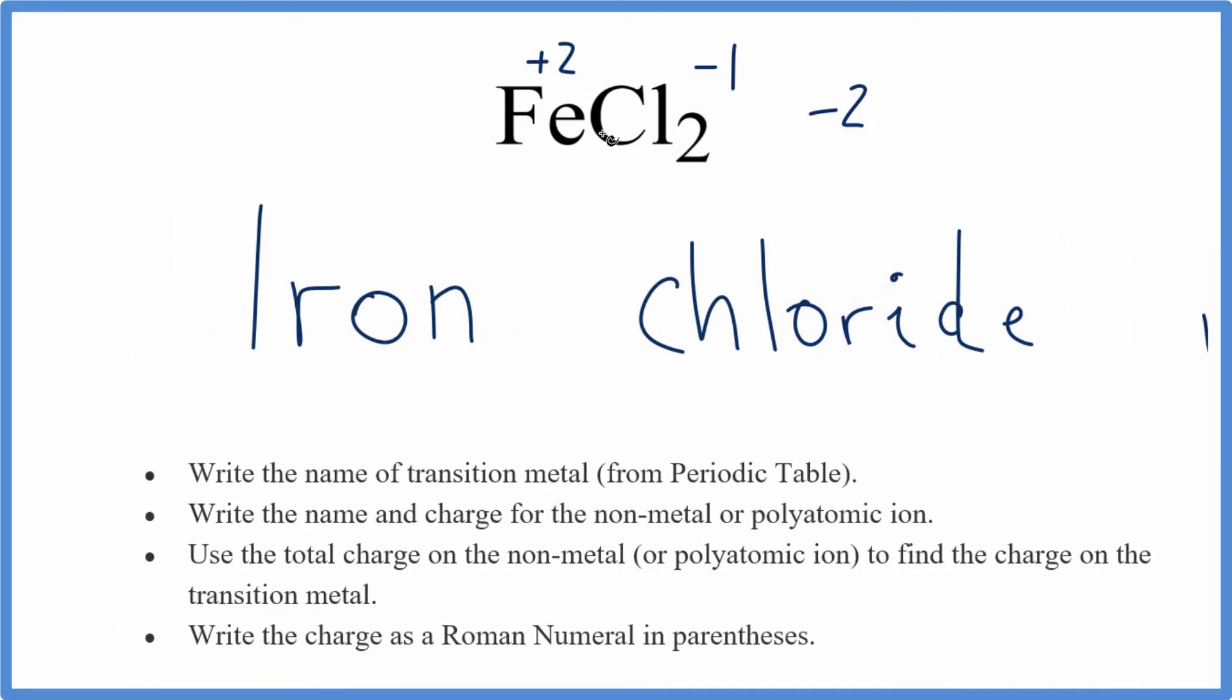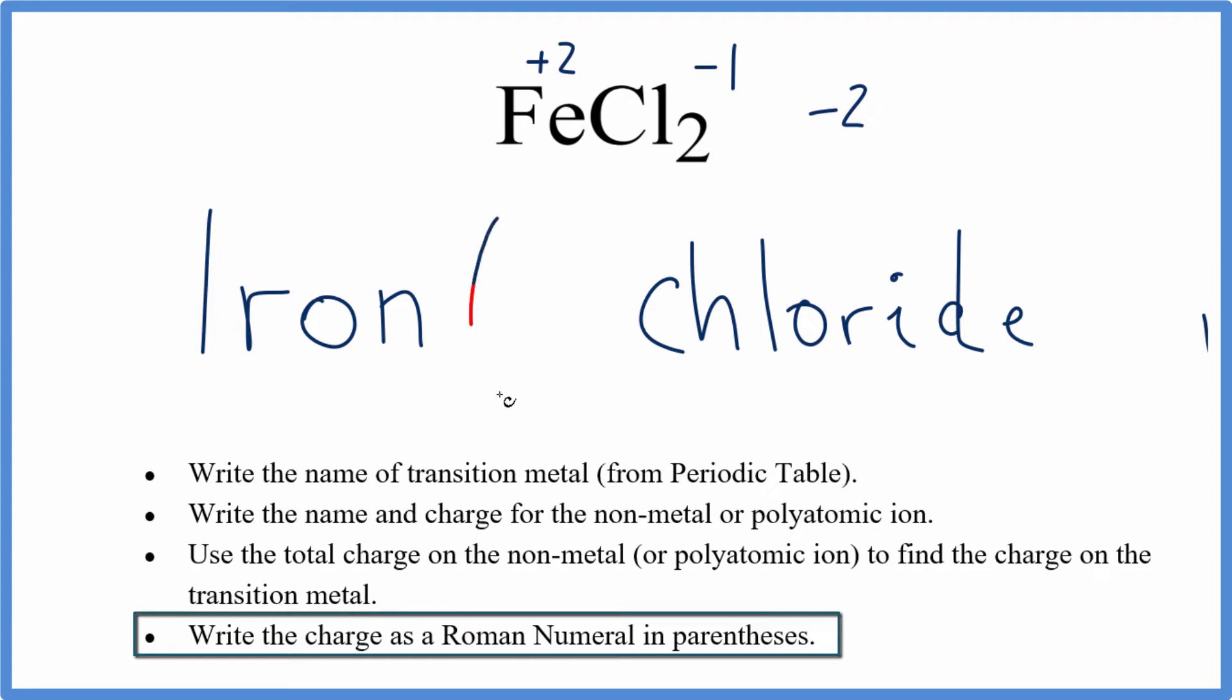Now that I know the charge of the iron, I put parentheses, write the Roman numeral 2, and the name for FeCl2 is iron 2 chloride. Understand that this 2, it tells us the charge, it really doesn't tell us anything else. It says we have one iron atom with a plus 2 charge.